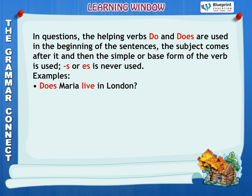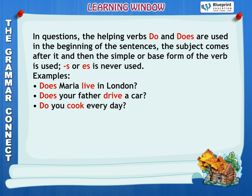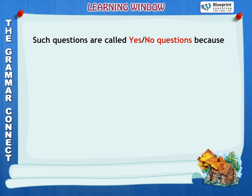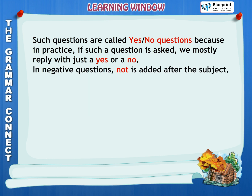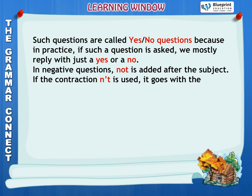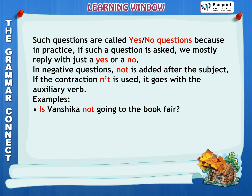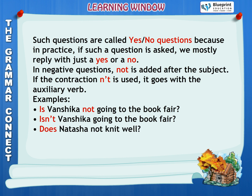Examples: Does Maria live in London? Does your father drive a car? Do you cook every day? Do they go to school on Saturdays? Such questions are called yes or no questions because in practice, if such a question is asked, we mostly reply with just a yes or a no. In negative questions, not is added after the subject. If the contraction isn't is used, it goes with the auxiliary verb. Examples: Is Vanshaka not going to the book fair? Isn't Vanshaka going to the book fair? Does Natasha not knit well? Doesn't Natasha knit well?